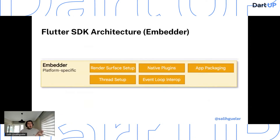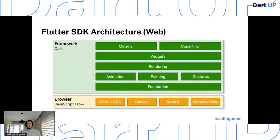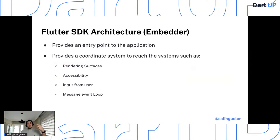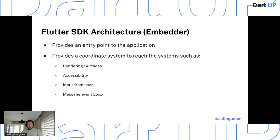That was the only thing about web to keep in mind. From here on we talk about Flutter's overall architecture. Starting from the bottom: the embedder provides an entry point to the application — think of activities on Android. It gives you information from the embedded platform, providing a coordinate system to reach systems such as rendering surfaces, accessibility inputs, and service message event loops.